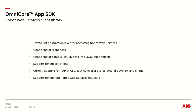The Robot Web Services client library is a JavaScript abstraction layer for accessing Robot Web Services. It takes care of a lot of the work required when using Robot Web Services, such as making correctly formatted requests and unpacking of the responses. It also has built-in functionality for unpacking complex RAPID data values, including records and arrays, into JavaScript objects. Subscriptions are also supported, making it easy to track changes on the controller without having to set up WebSockets and deal with subscription groups within Robot Web Services.